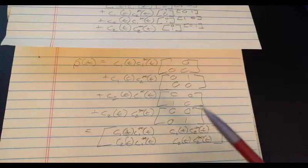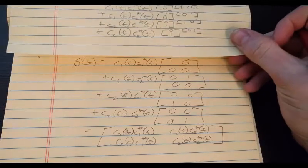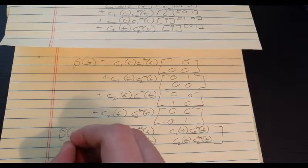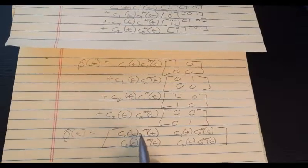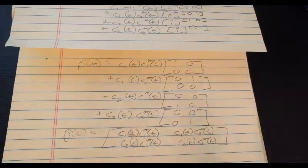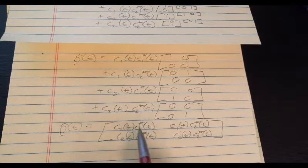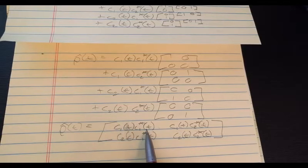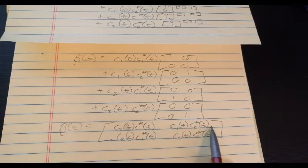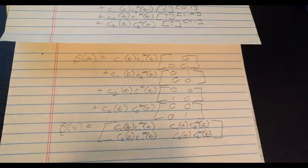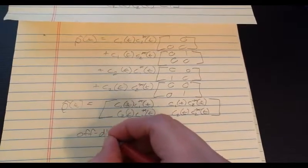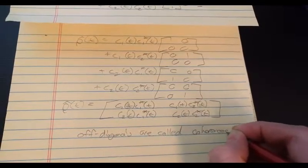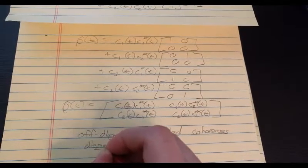Okay, so there we took rho, and all we did was we assumed two state system, and we see that we can write rho in terms of the multiplication between the probability amplitude coefficients. And note that the diagonals are the populations of the states. This is the population of state one, this is the population of state two. And the off diagonals, these are called coherences. So off diagonals are called coherences. Diagonals are populations, which you probably already know.